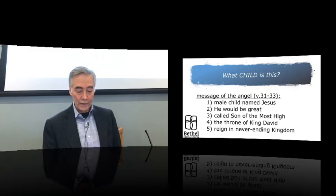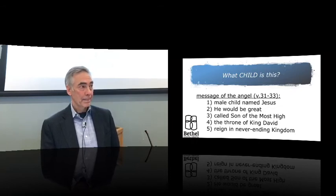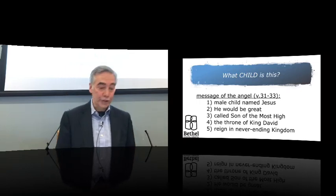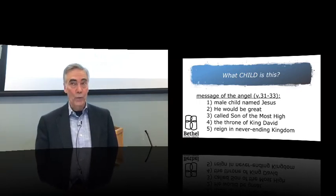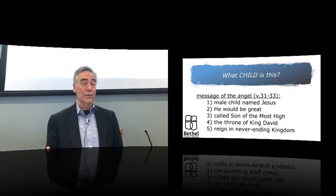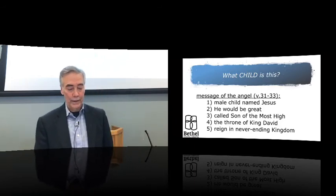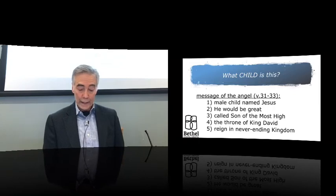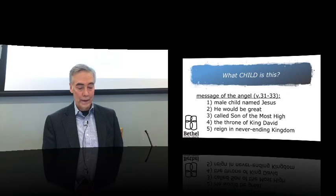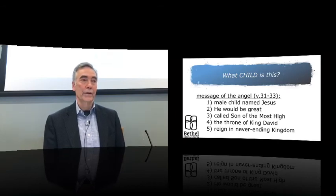Verse 36, Behold, your relative Elizabeth is in her old age. She has also conceived a son, and this is the sixth month with her, who was called barren. Given Elizabeth's age, this was miraculous. A sure sign of confirmation that what Mary was experiencing was not a bad dream, it was not a hallucination, this was a message from God. Verse 37, For nothing will be impossible with God. And Mary said, Behold, I am the servant of the Lord. Let it be to me according to your word. And the angel departed from her.